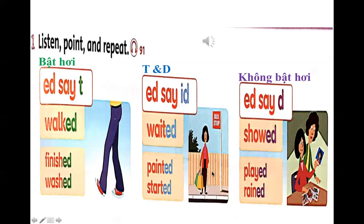Phần còn lại là những từ đọc không bật hơi — có nghĩa là các bạn để tay lên miệng thì không có hơi ra. Với từ 'show' — show — cái miệng không hề bật hơi. Thì các bạn đọc không phải 'show-id', mà là 'showed'. Showed. Tương tự với từ 'play' — chúng ta không hề bật hơi ra — played. Played. Và 'rained' — rained.